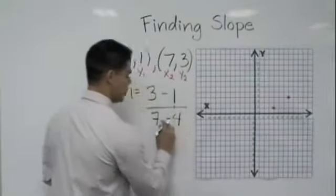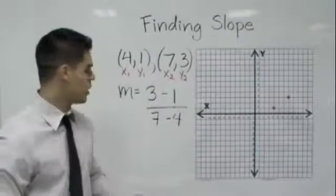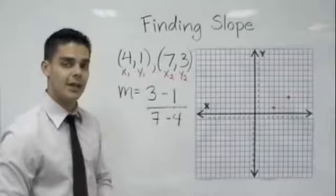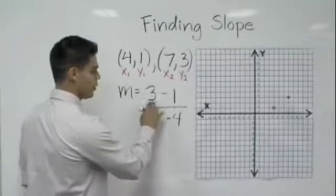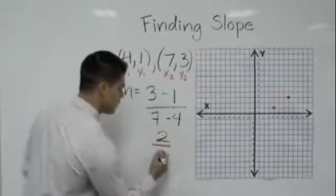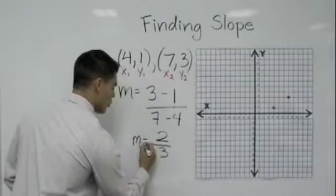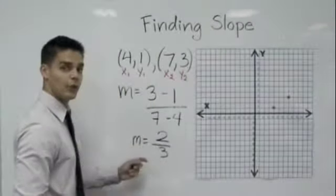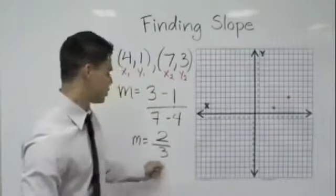And notice again I left my negative sign. Very important that you guys remember that the negative sign is there or that minus sign. Now all we have to do is say 3 minus 1 gives me 2 and 7 minus 4 gives me 3. Therefore my slope or my m is equal to 2 over 3. So the slope of these two points is 2 over 3.